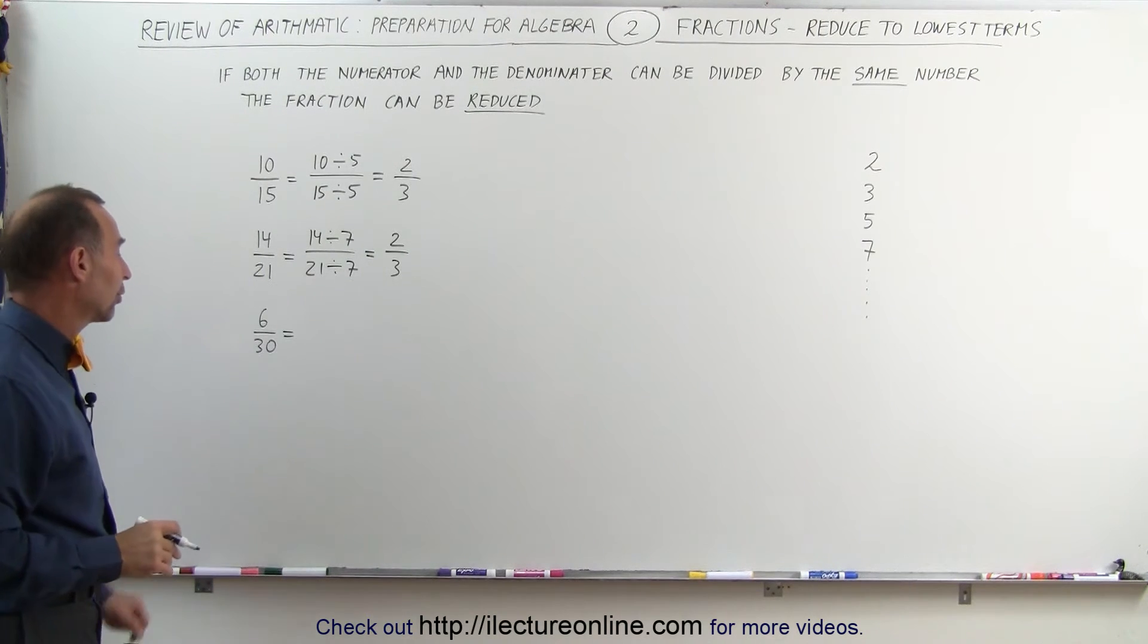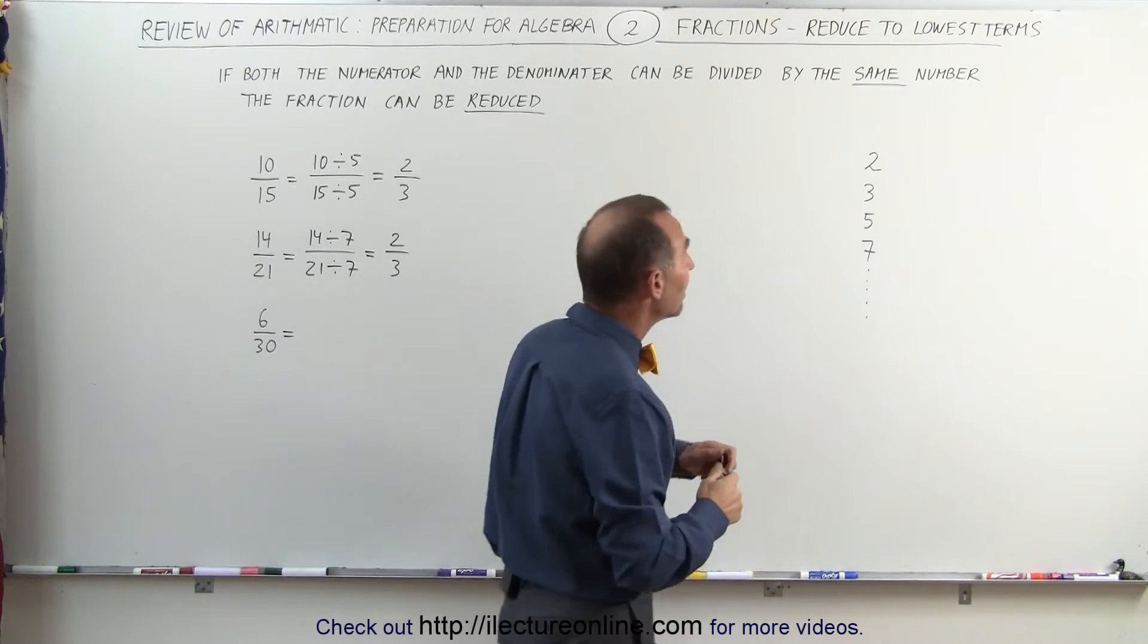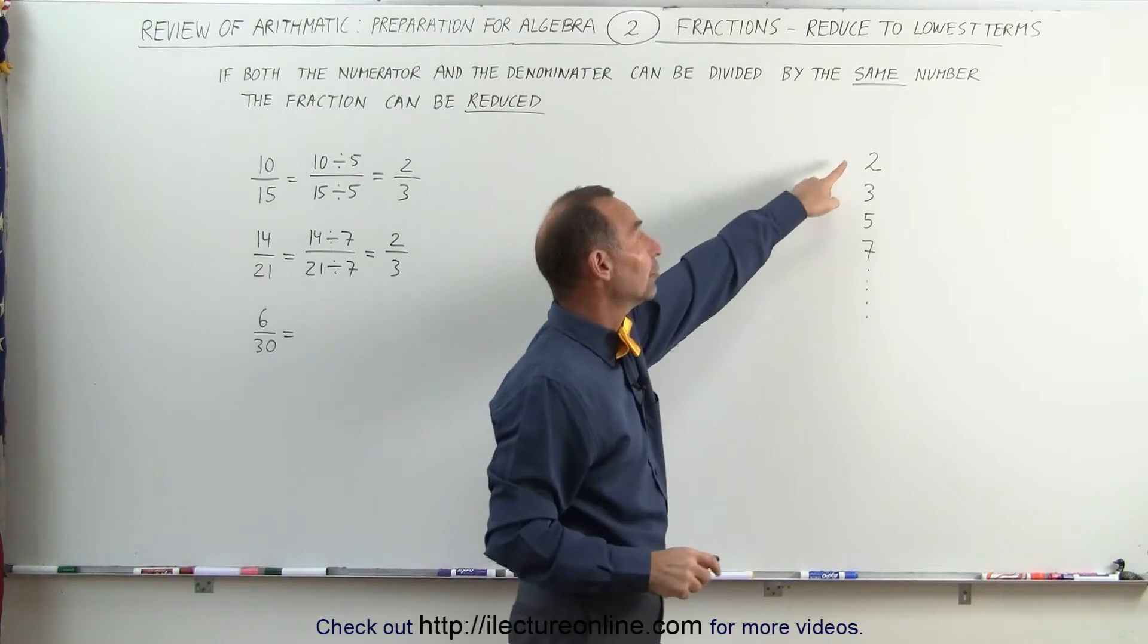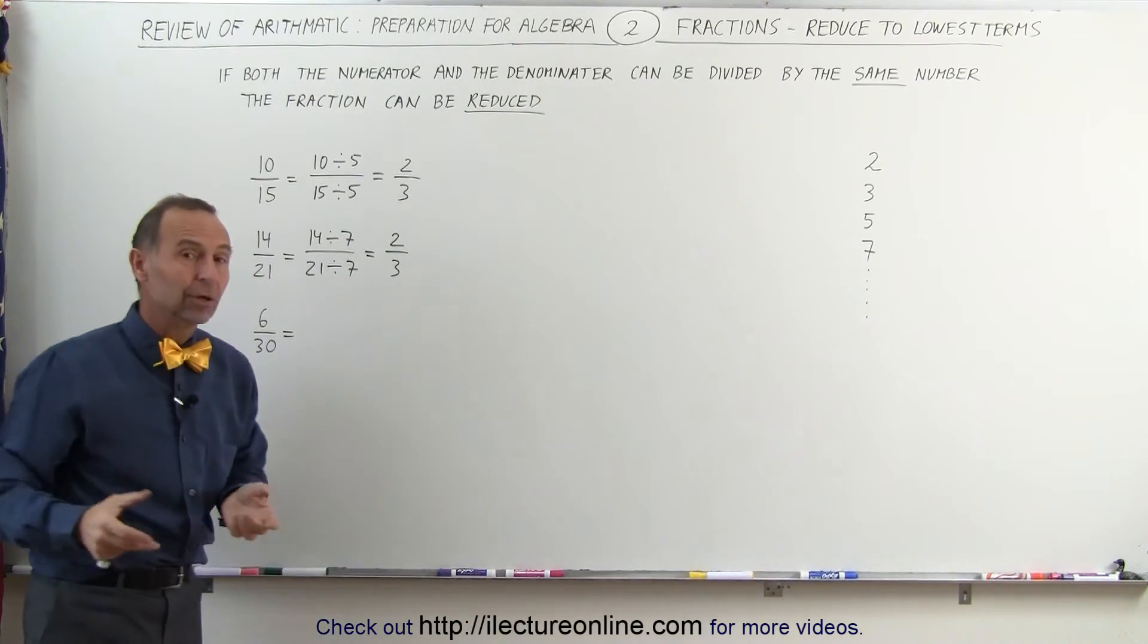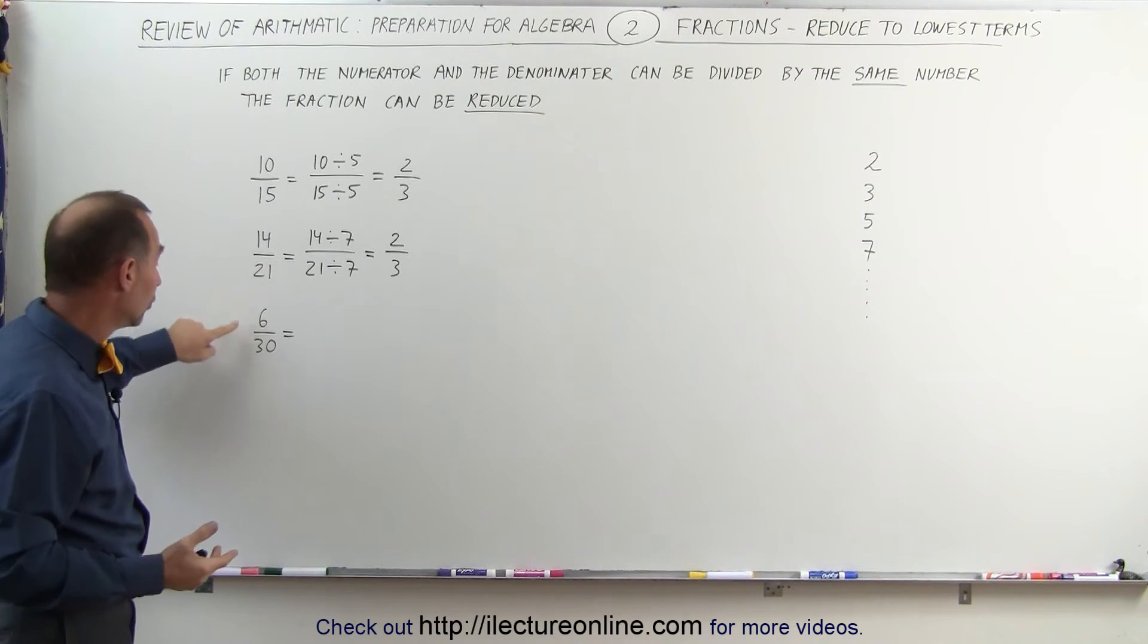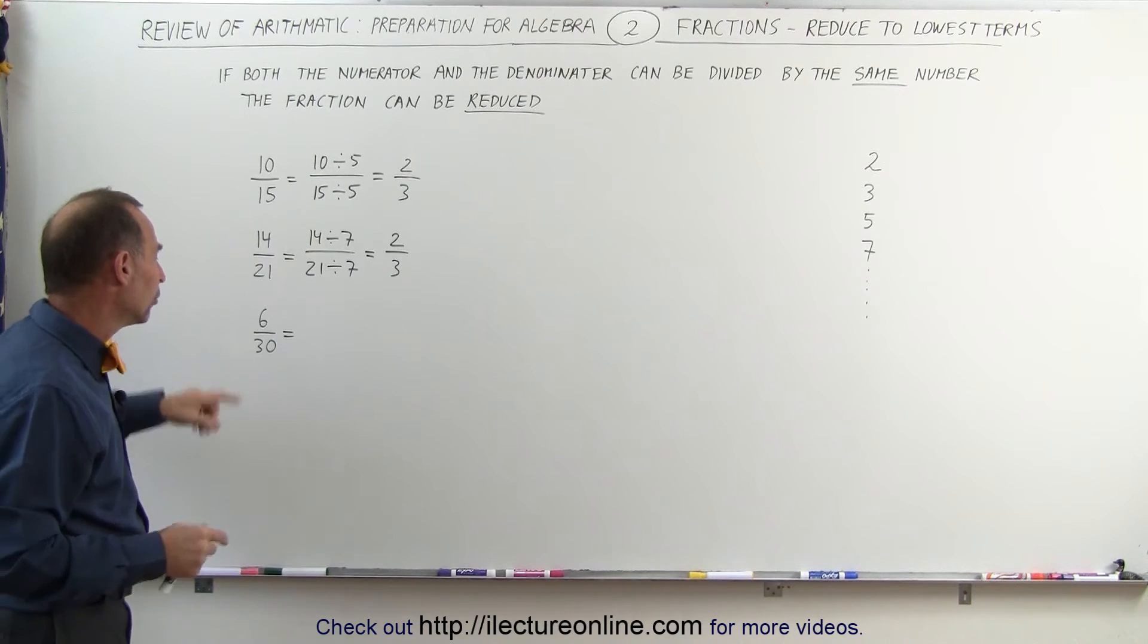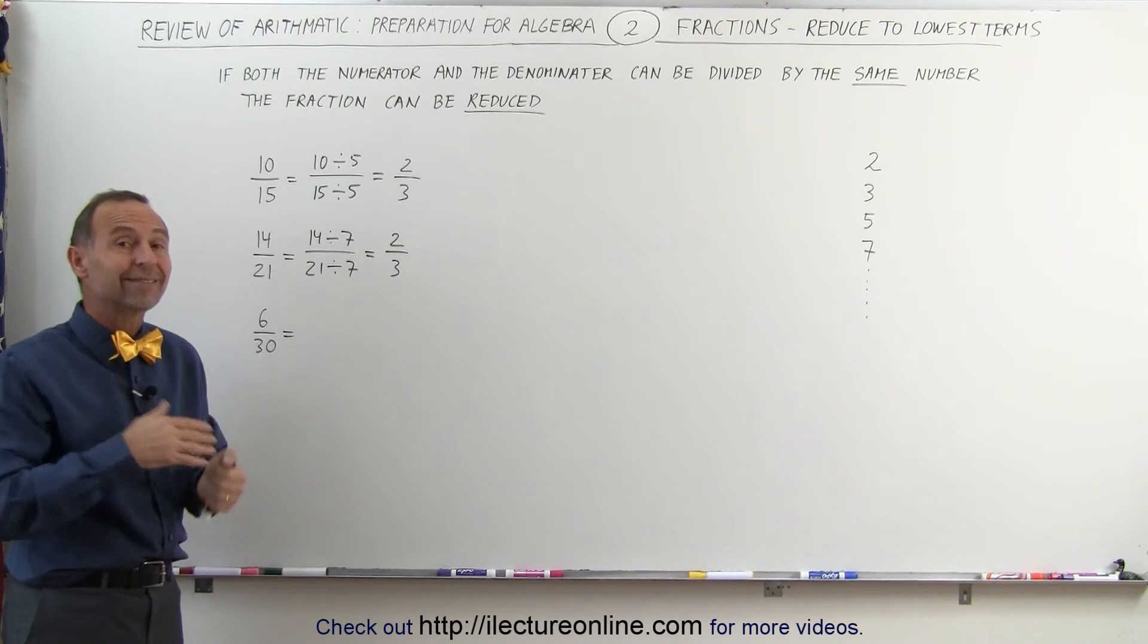Here we have 6 divided by 30. Now notice, if we go down the line here, we can see that both the numerator and the denominator can be divided by 2. The rule is, if they end in an even number, they're divisible by 2. 6 is an even number, divisible by 2. 30 is an even number, divisible by 2. But you can also realize that both 6 and 30 are divisible by 6.